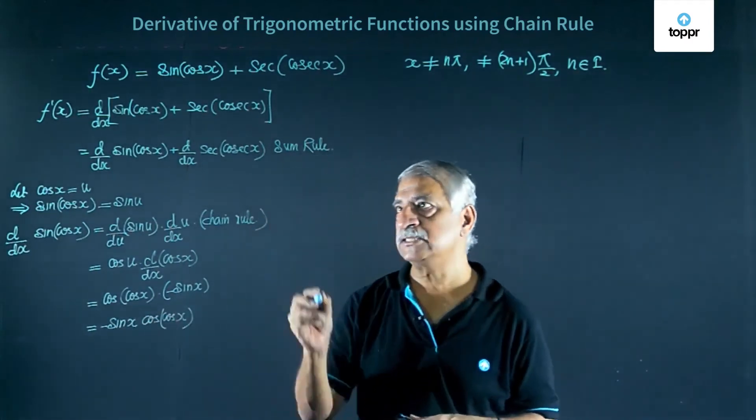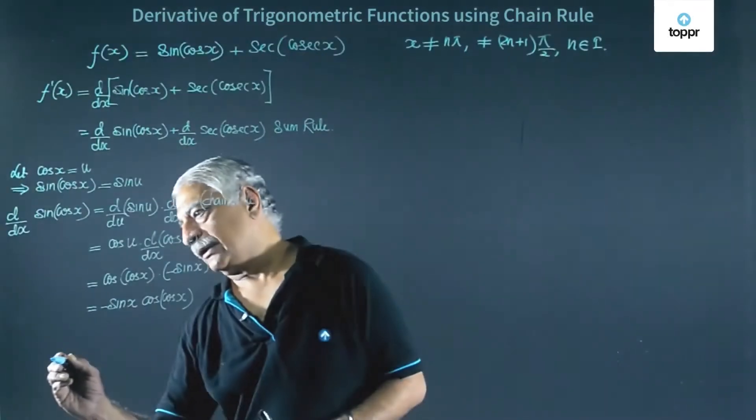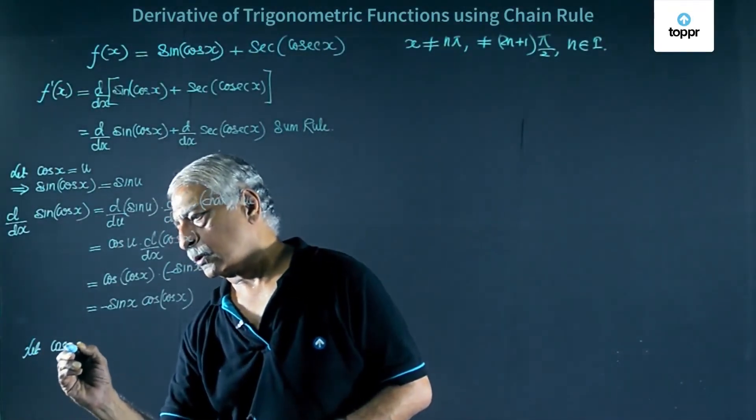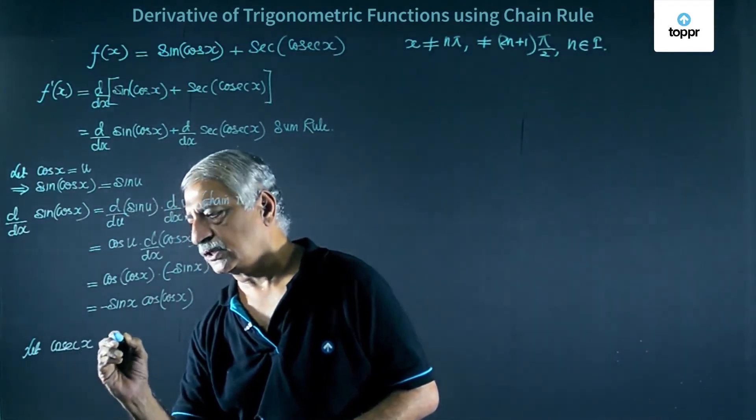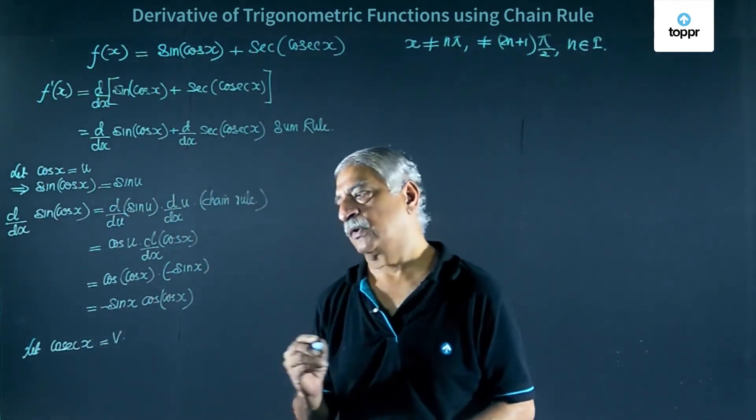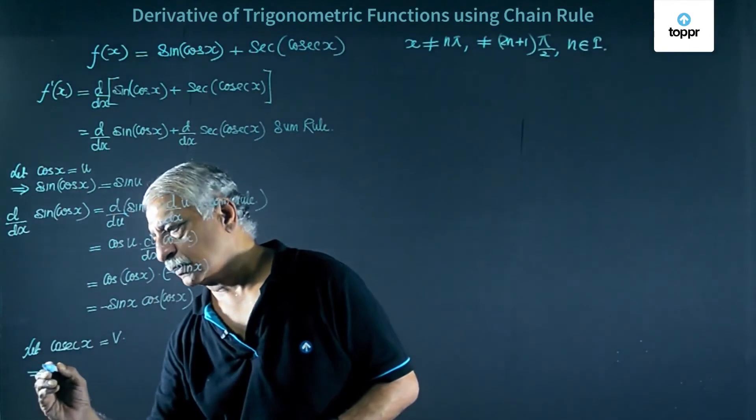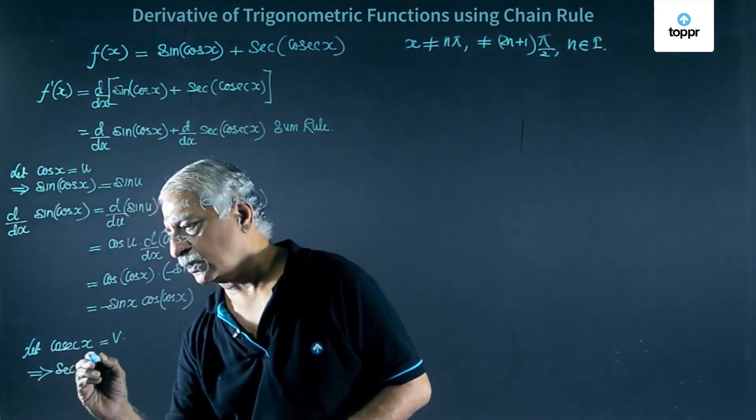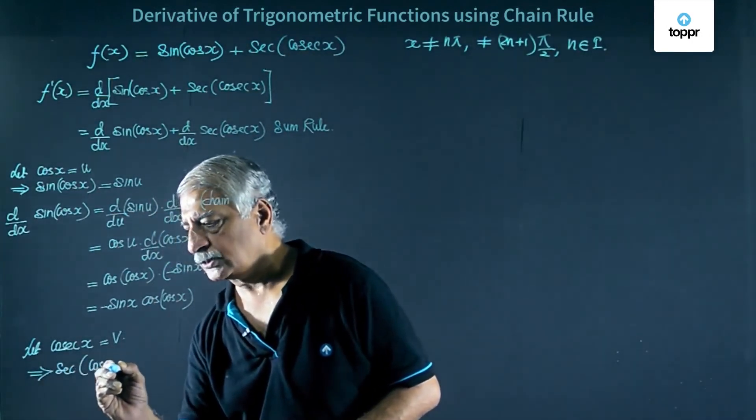Now let us consider the next one. Let cos x, say this is equal to v. This implies sec of cos x is equal to sec v.